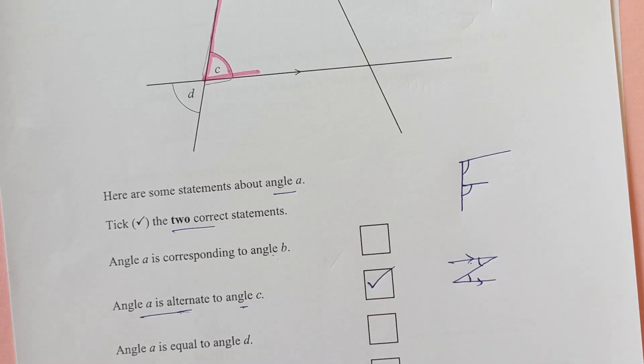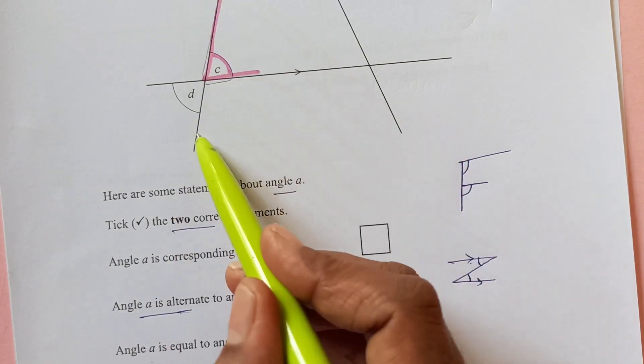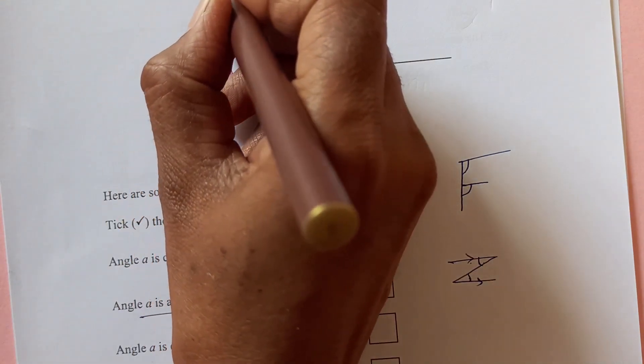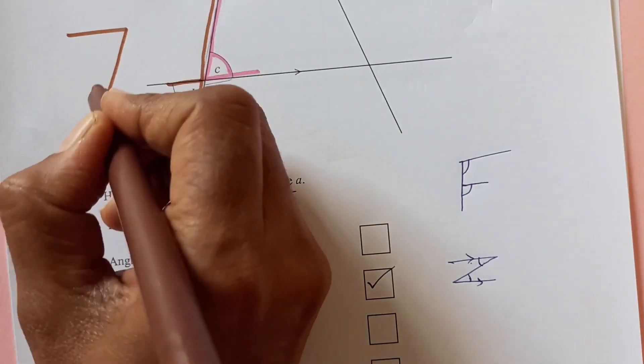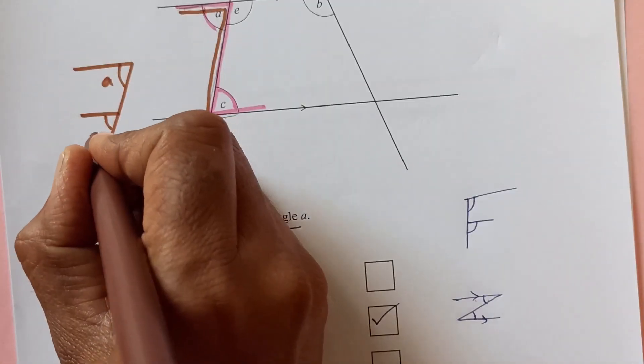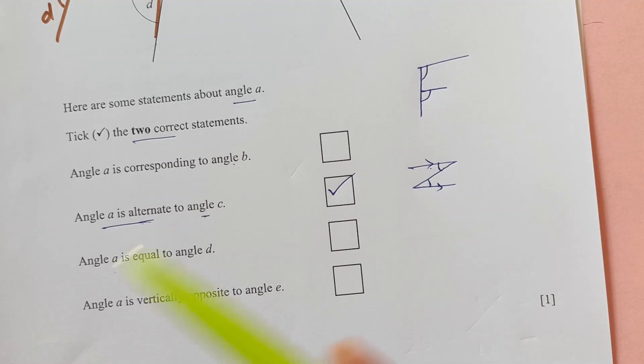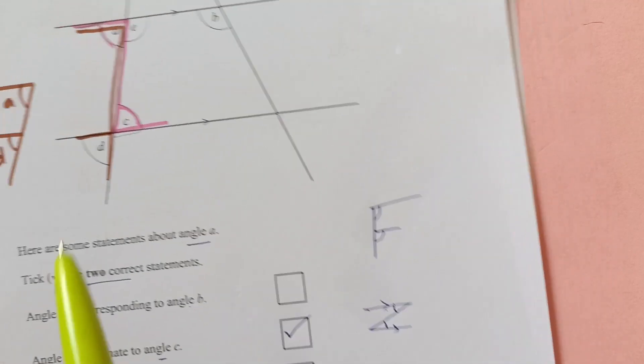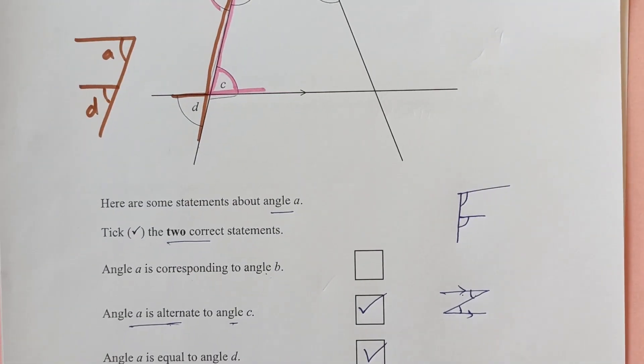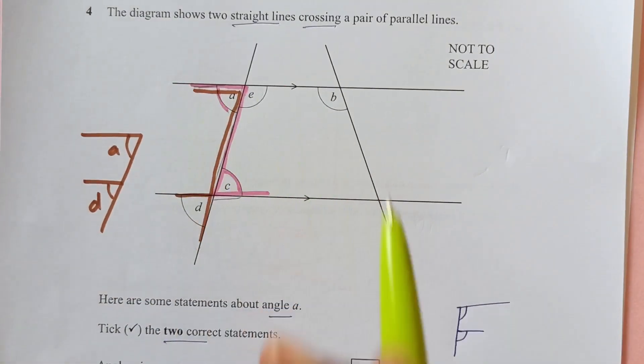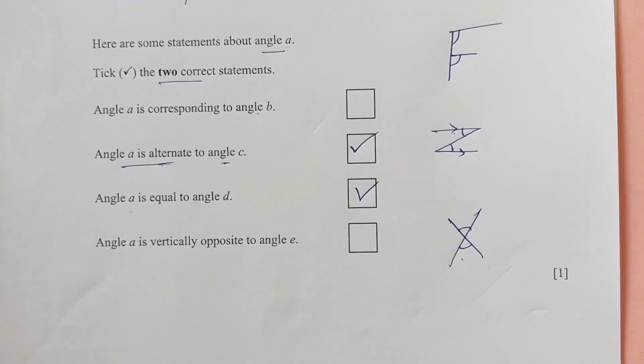So, we are talking about A and C. If you look here, this A and C. We have here Z shape. This and this, they are alternate. So, we are going to take this one. Now, angle A is equal to angle D. If you look at angle A and D, look carefully. We can see the F shape here. So, this angle and this angle, they are corresponding. So, this is angle A and this is angle D. Corresponding angles are always equal. So, yes, that is correct. Now, angle A is vertical opposite to angle E. Vertical opposite angles are like this. When two lines cross and then we have these opposite angles. But these lines don't cross. So, this is not the answer. So, we are not going to take that.